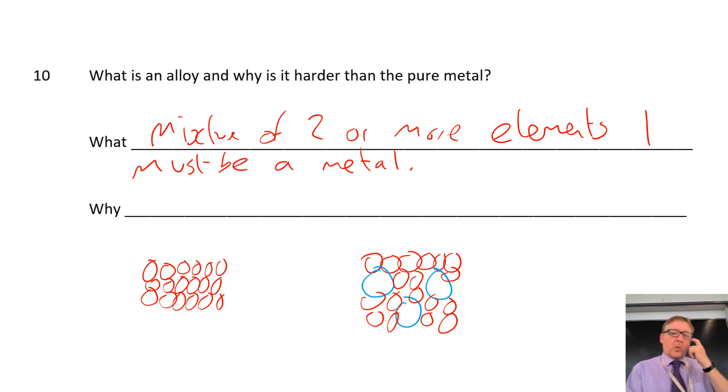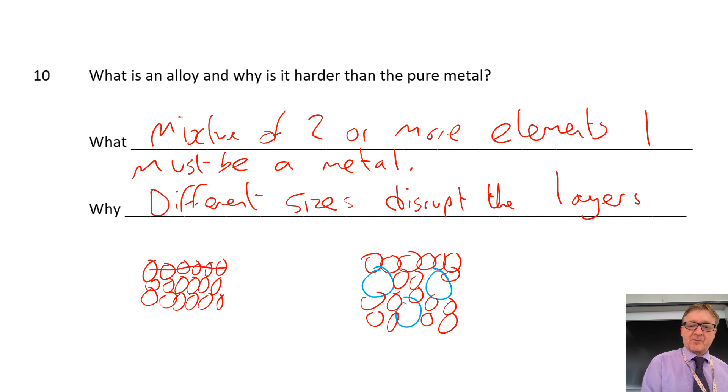Now, why are they harder than normal? What happens is the different sizes disrupt the layers. So basically, these here, they can move over the top of each other very easily. Over here, that layer could move, but then these ones disrupt the actual movement of everything.